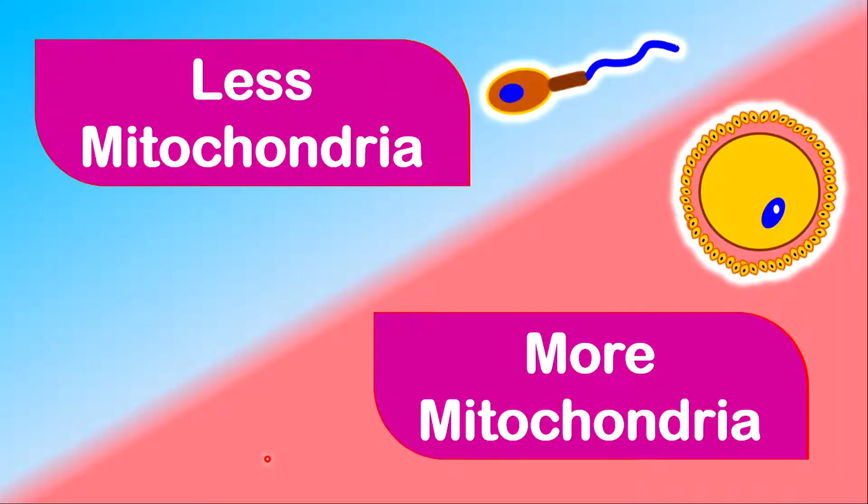The sperm cell contains less mitochondria compared to the egg cell, reason being that when the nucleus of the sperm fuses with the egg cell, it will form a zygote. After the zygote is formed, after fertilization, there will be a rapid process of cell division to form the embryo. This rapid process of cell division will require a lot of energy, hence the need for more mitochondria.